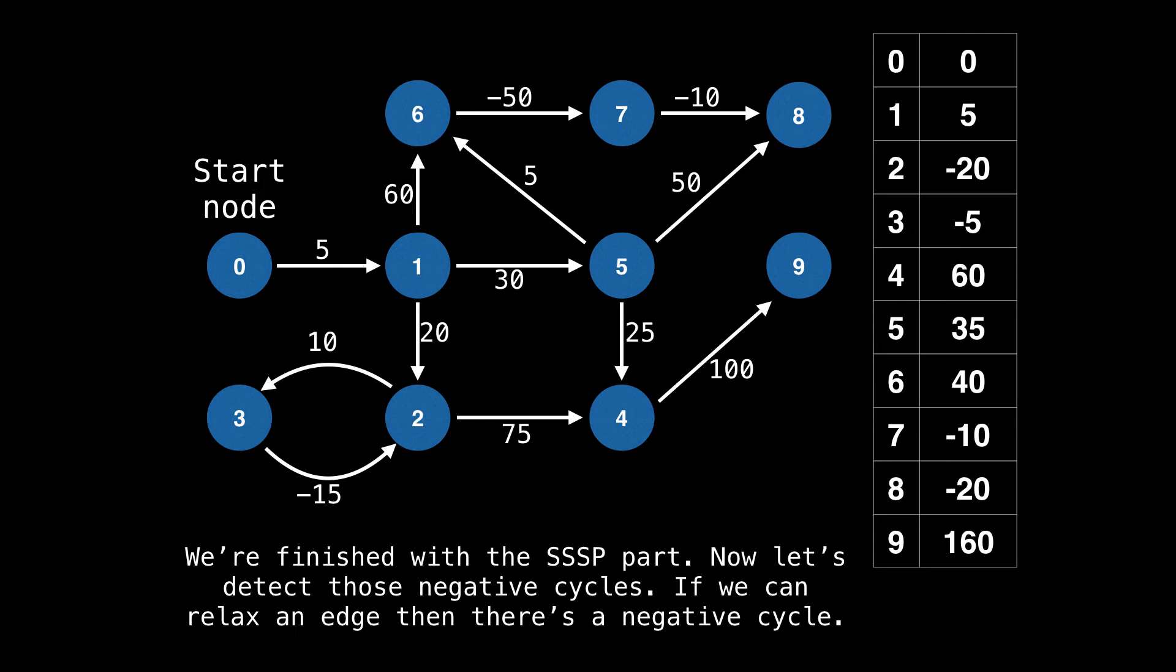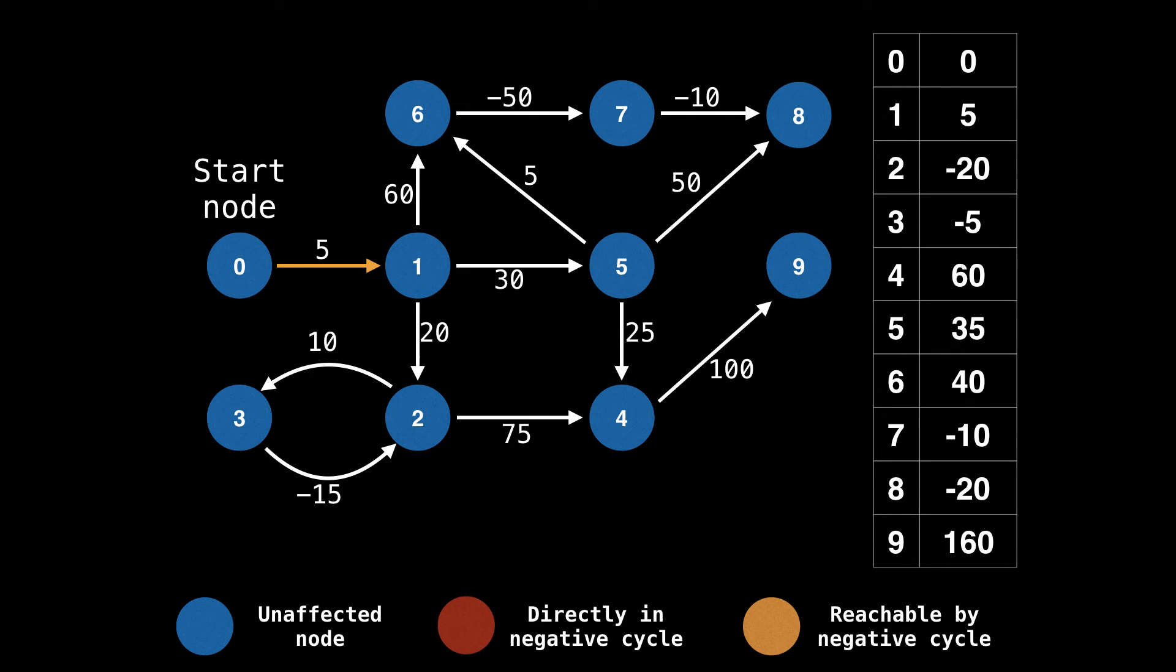Let's execute the algorithm a second time. Same procedure as usual, just relax each edge. But when we are able to relax an edge, update the node's value to negative infinity instead. Let's process some edges until something interesting happens. So it appears that when we went from node 2 to node 3, we are able to relax the edge and obtain a better value for node 3 than was previously there. So node 3 is part of some negative cycle. Therefore, I will mark it as red.